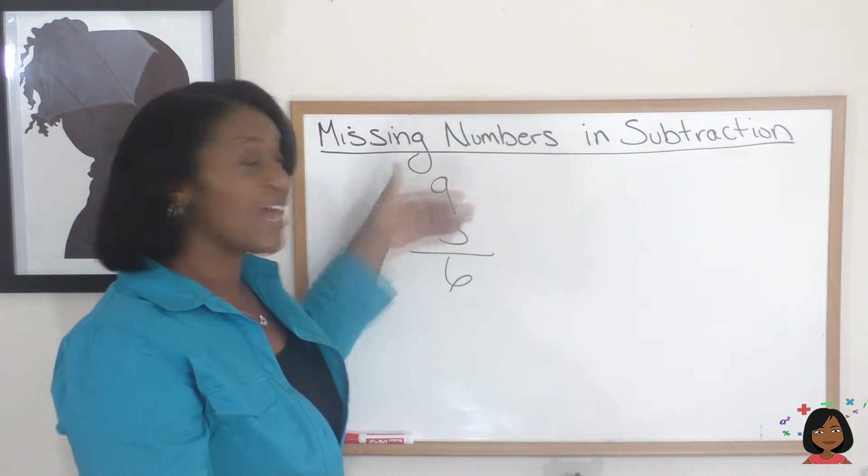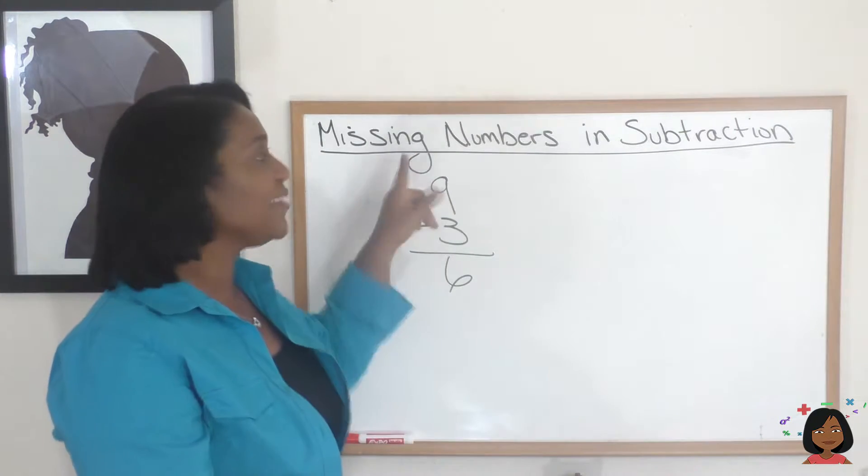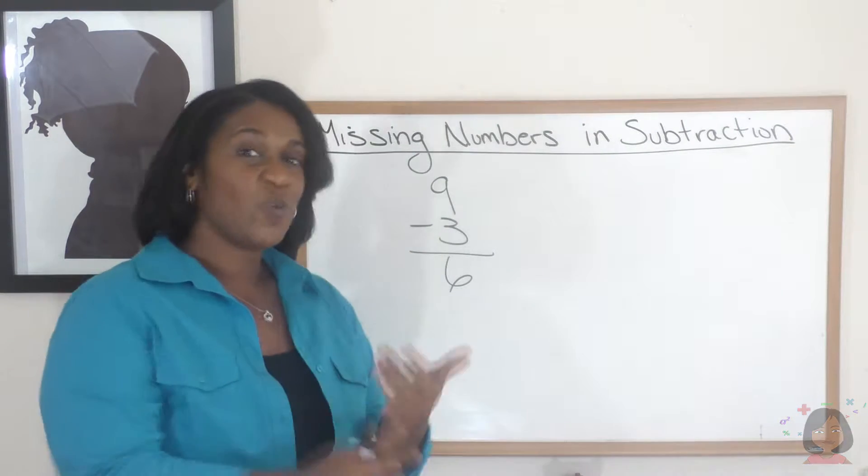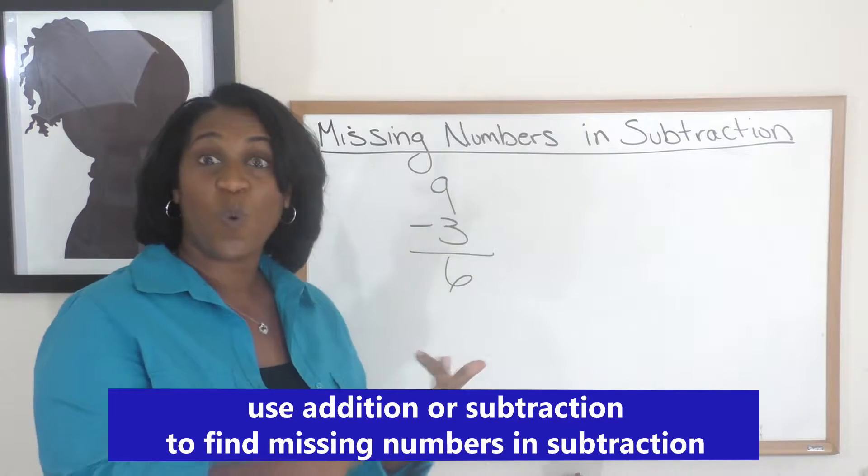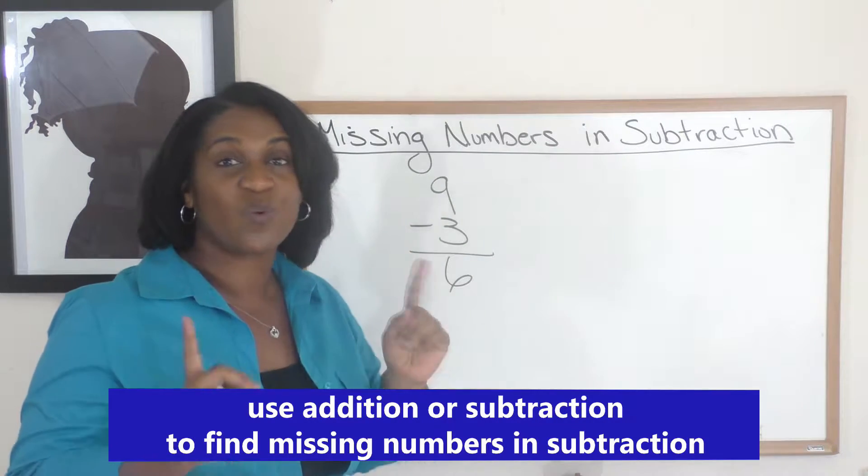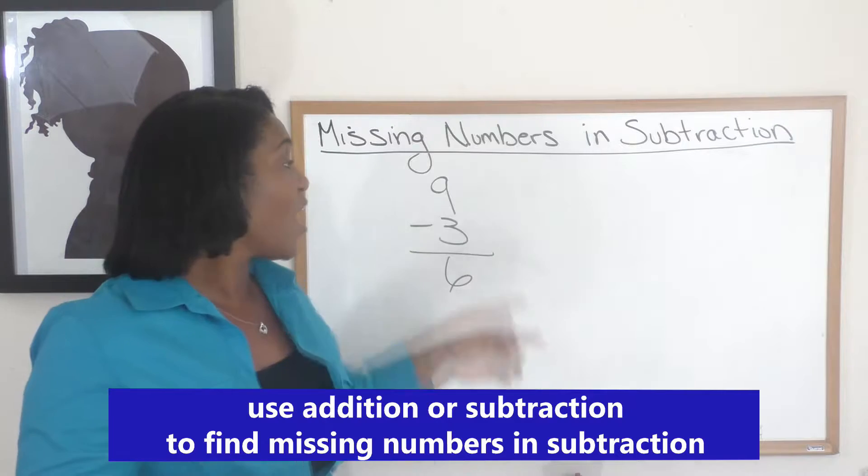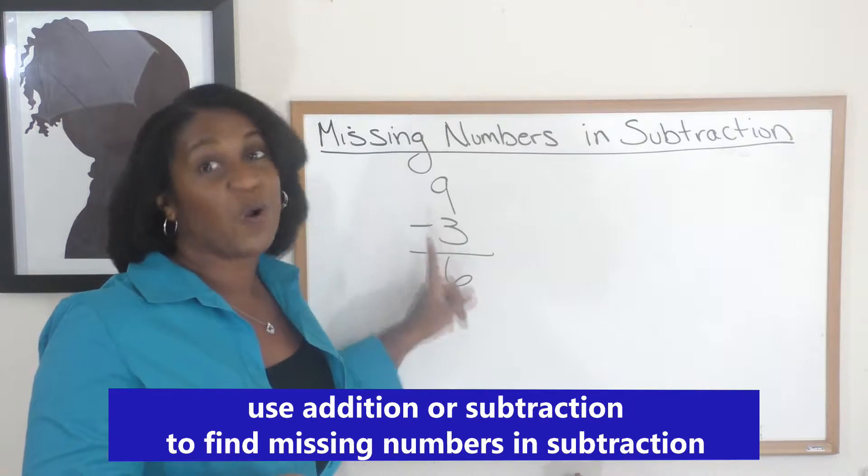So in this instance, I would use addition. So to find the missing numbers in subtraction, we can either use subtraction or addition. It just depends on which number you're trying to find. Are you trying to find the minuend or the subtrahend?